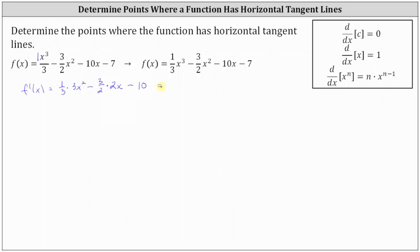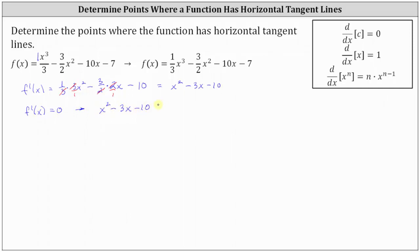Let's simplify the derivative function. In the first product the 3s cancel, and in the second product the 2s cancel. So f prime of x equals x squared minus 3x minus 10. To find the x-values where the function has horizontal tangent lines, we set f prime of x equal to zero, giving us x squared minus 3x minus 10 equals 0.